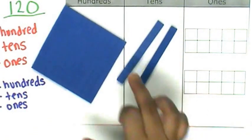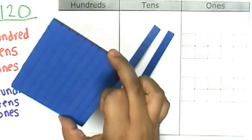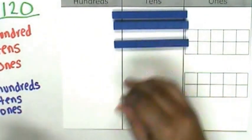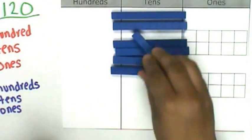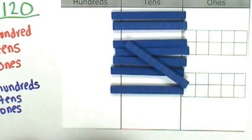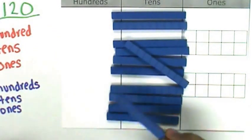Let's decompose this 100 into 10 tens. 10, 20, 30, 40, 50, 60, 70, 80, 90, 100.